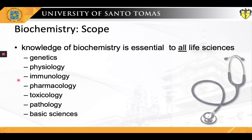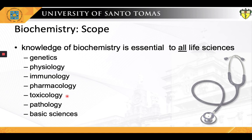The scope of biochemistry is diverse and has been proven to be crucial to the life sciences. The biochemistry of nucleic acids lies at the heart of genetics, and the use of genetic approaches has been critical for elucidating many areas of biochemistry. Physiology, the study of body function, overlaps with biochemistry almost completely. Immunology employs numerous biochemical techniques, and many immunologic approaches have found wide use by biochemists. Pharmacology and pharmacy rest on a sound knowledge of biochemistry and physiology; most drugs are metabolized by enzyme-catalyzed reactions.